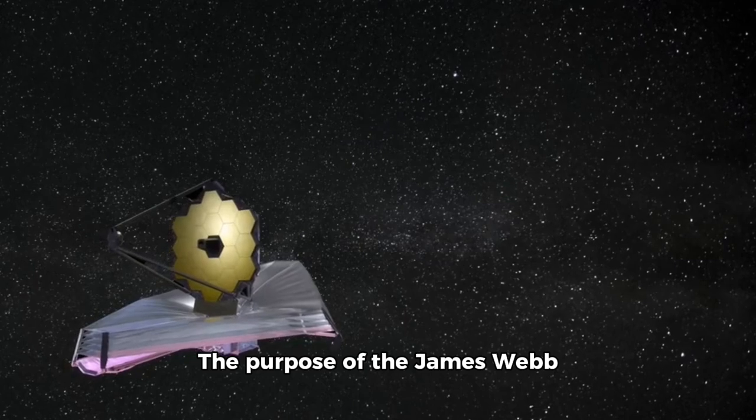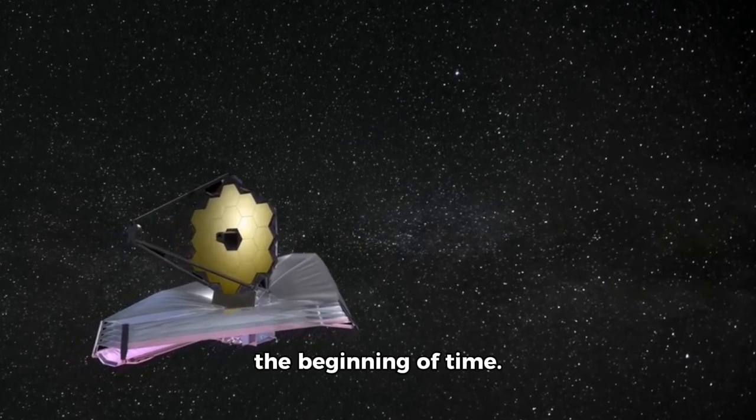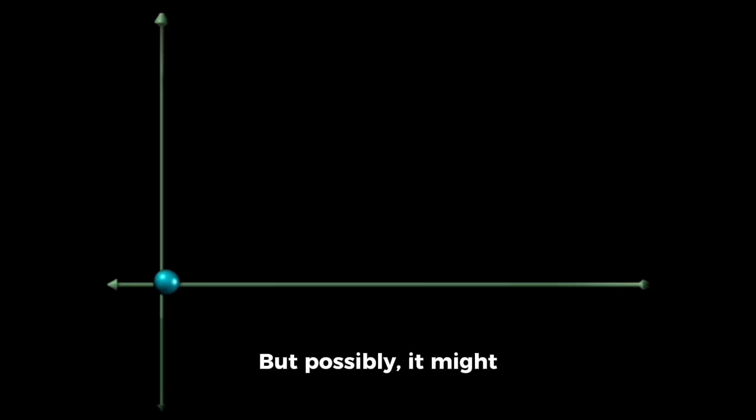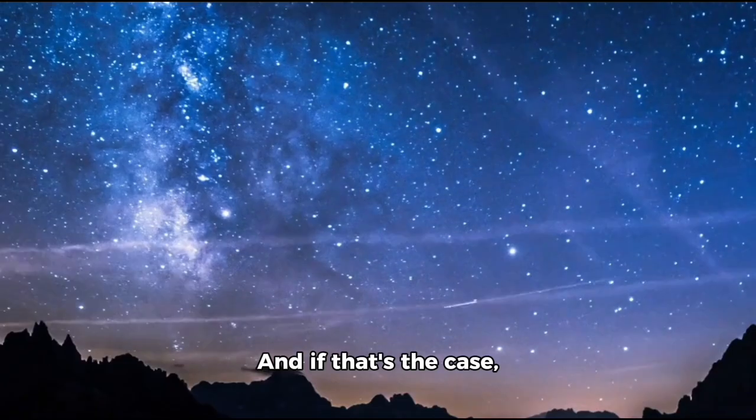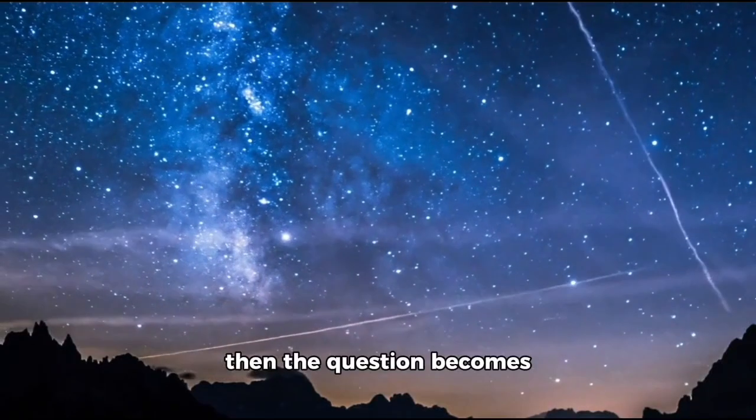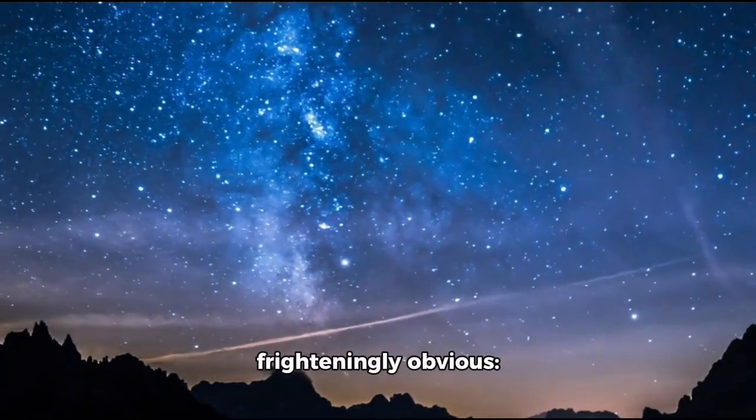The purpose of the James Webb Telescope was to delve into the beginning of time. But possibly, it might have been destined to capture this object precisely at this very moment. And if that's the case, then the question becomes frighteningly obvious: who did send it? Why is this?